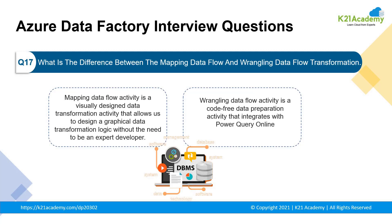Our next question: what is the difference between mapping data flow and wrangling data flow transformation? Mapping data flow activity is a visually designed data transformation activity that allows you to design graphical data transformation logic without the need to be an expert developer, and it is executed as an activity within the ADF pipeline on an ADF fully managed scaled-out Spark cluster. Whereas data wrangling flow activity is a code-free data preparation activity that integrates with Power Query Online in order to make Power Query M functions available for data wrangling using Spark execution.